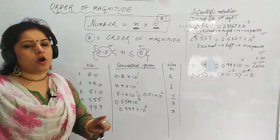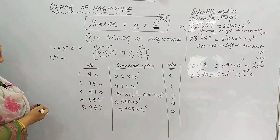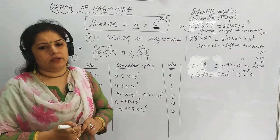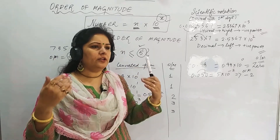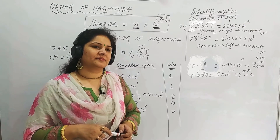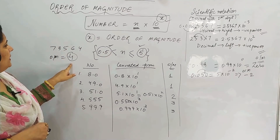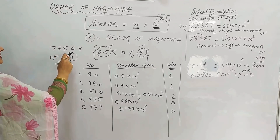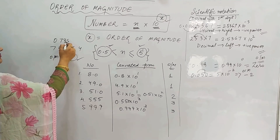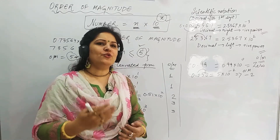Now, given the number 73564 — what is the order of magnitude? How big is this number? The order of magnitude tells us. The answer is 5, meaning this number is in the range of 10,000s. Convert: 0.73564 × 10⁵ — decimal moves 5 places to the left, giving positive power 5. So order of magnitude is 5.